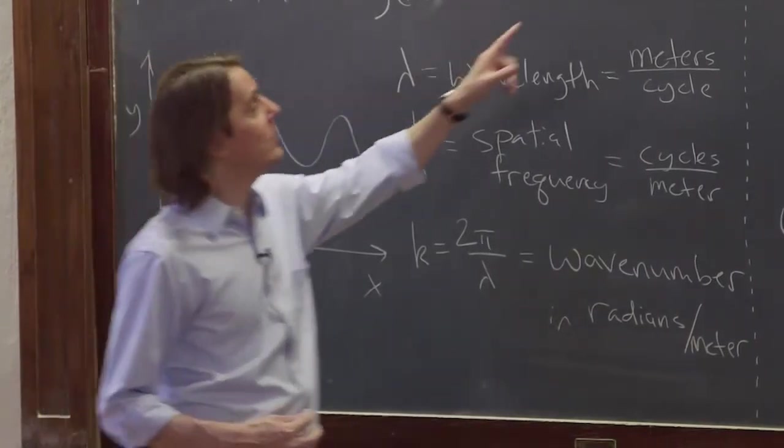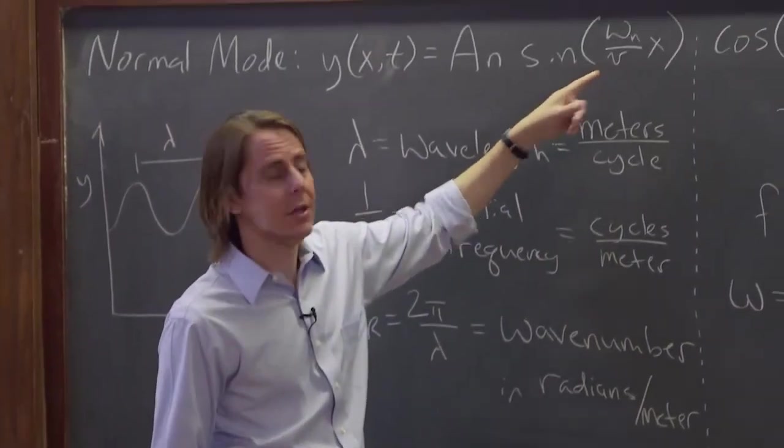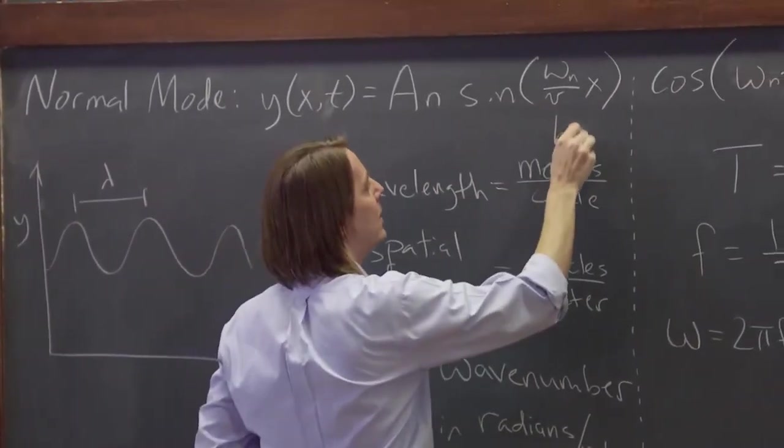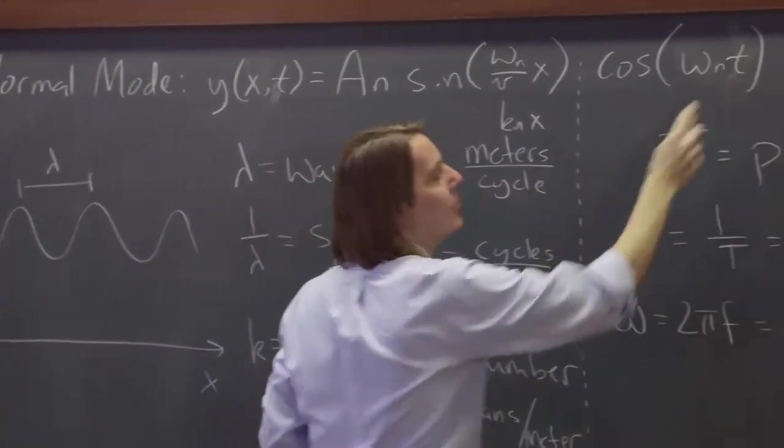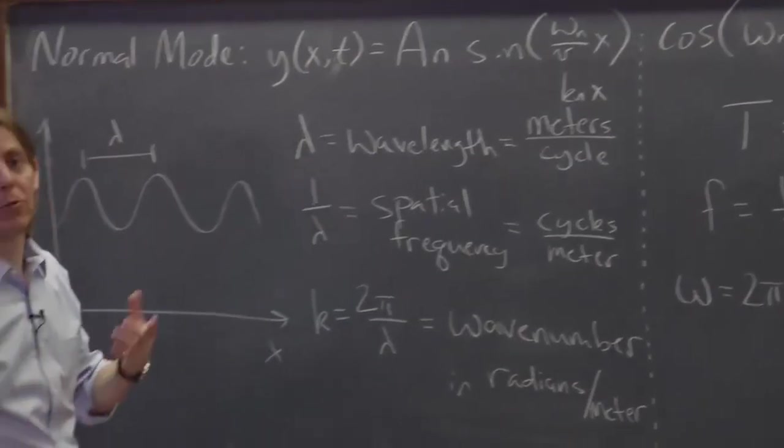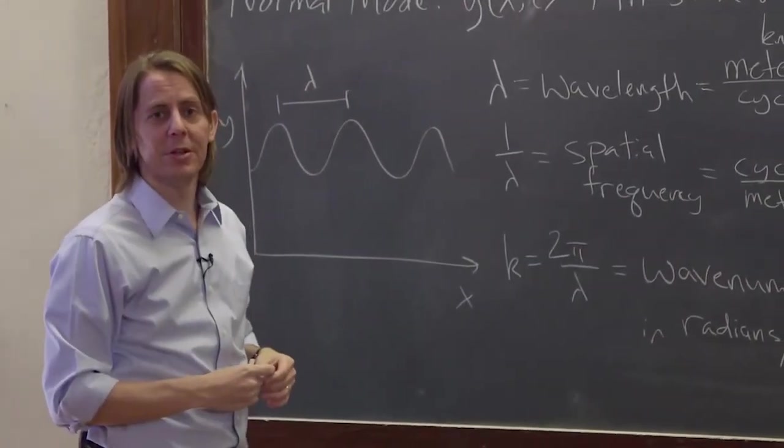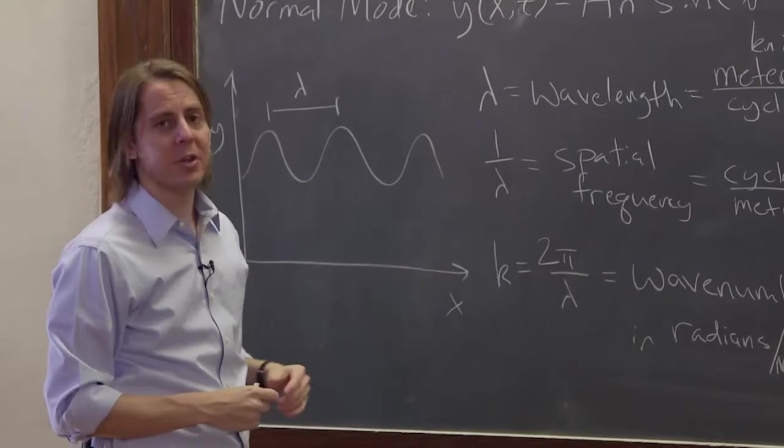So we could replace this with kn. In some books, you might see this written knx. Any time in a sinusoid, you have k times the x, and you have omega times the t, is the sort of grown-up way to write it. But you can write omega over v. It doesn't matter. But anyway, that's what k is.